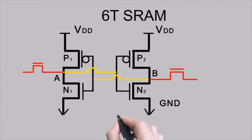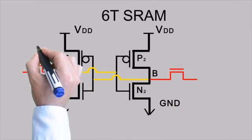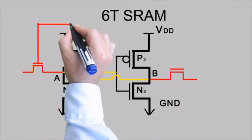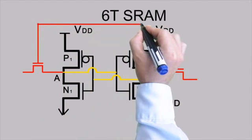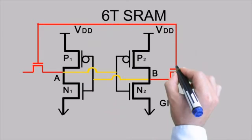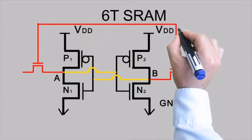And what we are going to do is we are going to short the inputs of both these NMOS transistors and we'll call this as word line.